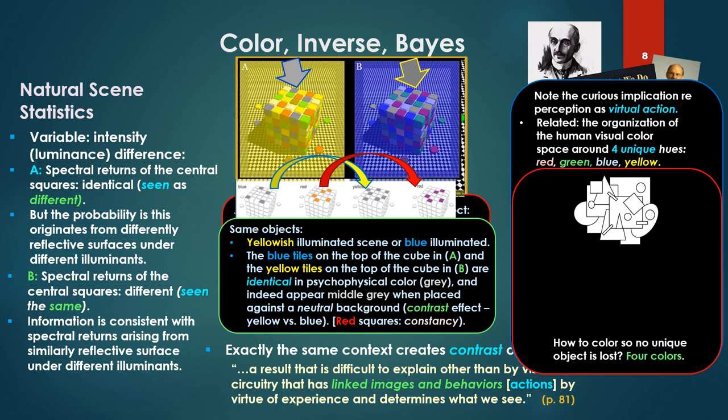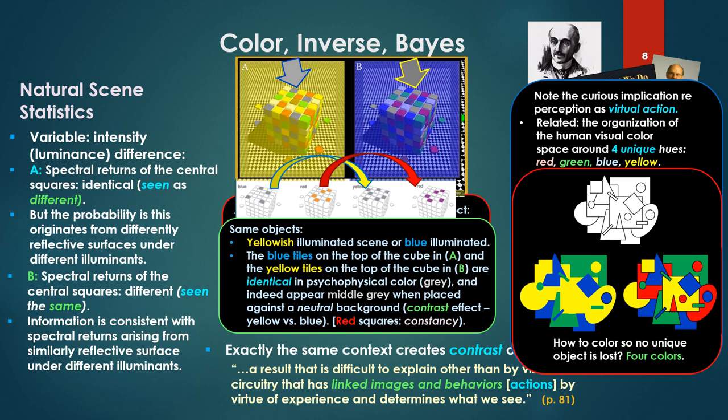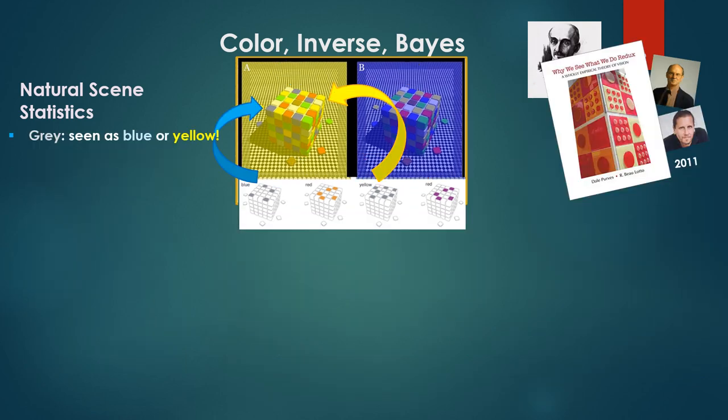They make a note of a related phenomenon, the organization of the human visual color space around four unique hues: red, green, blue and yellow. Now there's no basis in the spectra, nor is this predicted by the three cone types in the retina. It's a mystery. And yet it seems oriented to action too, the visual system solution to the four color map problem. You need four colors to uniquely identify objects to act upon.